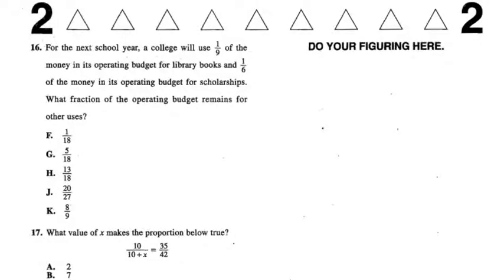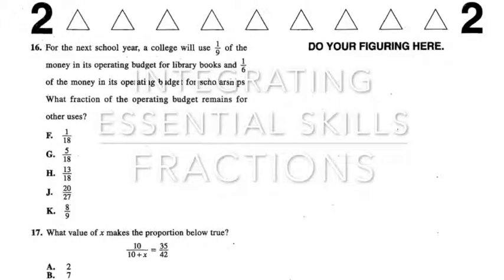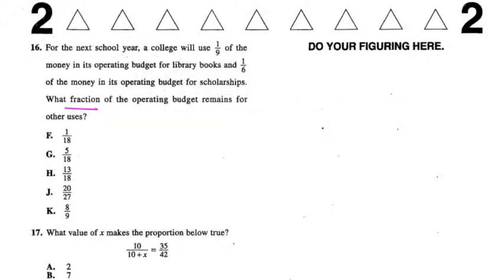Number 16 is an integrating essential skills question dealing with fractions. For the next school year, a college will use one-ninth of the money in its operating budget for library books and one-sixth of the money in its operating budget for scholarships.